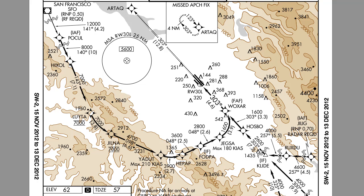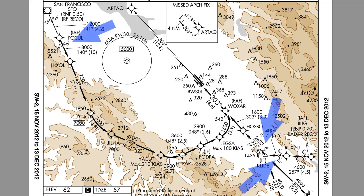Another way to show a break in scale is by a jagged line crossing the course. There are numerous examples of mileage breaks in this chart.